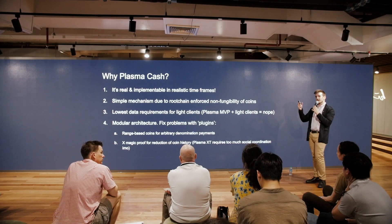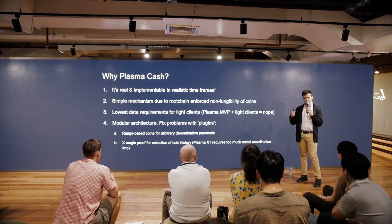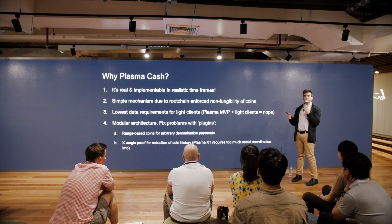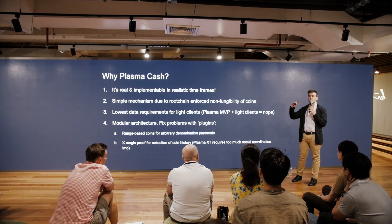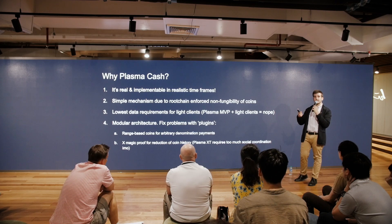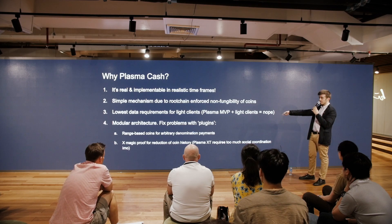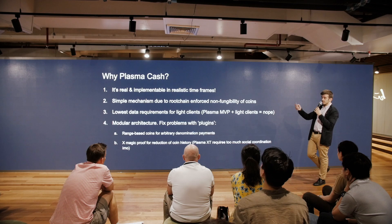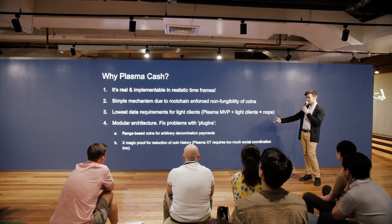Why Plasma Cash specifically? First, it's real. Second, each coin on the plasma chain is unique — non-fungible — which gives an easy and safe exit game. Third, it has low data requirements; other plasma alternatives require storing a lot of data, so you can't run a plasma client on your phone without trust compromises. Fourth, it's modular: if you don't like something, you add a plugin or small alteration — for example, fixing payment problems or using zero-knowledge proofs for lighter clients.